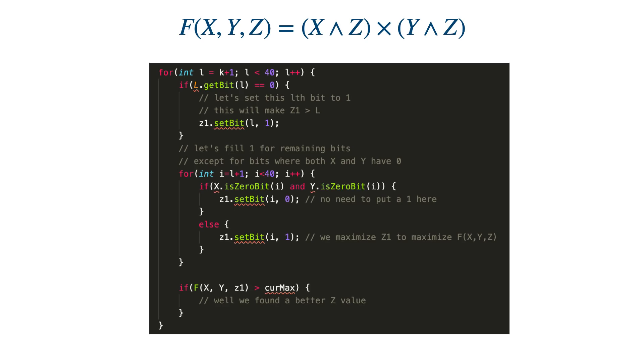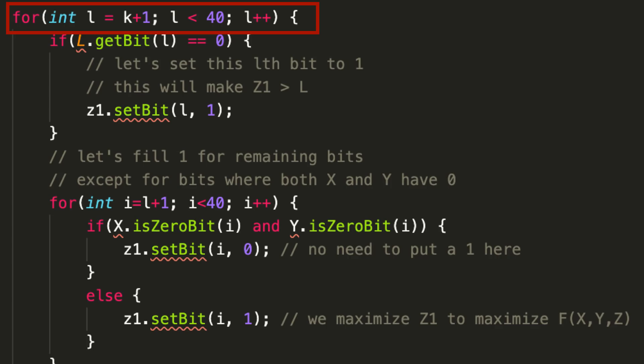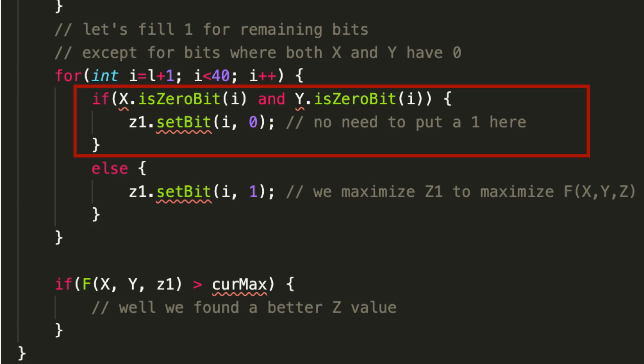Now I'm having this code for Z1 and L. You can similarly do that for Z2 and R. The idea is to iterate on the remaining k plus 1 to 40 bits. I'm trying to find those bits where L is having zero at its bit position. I have to make sure that Z1 is greater than L. Whenever L is having a zero in its bit, I'm setting that particular bit to one. I have ensured that Z is now in the range L to R. Now for the remaining bits, I am focusing on my target, which is to maximize F(X,Y,Z).